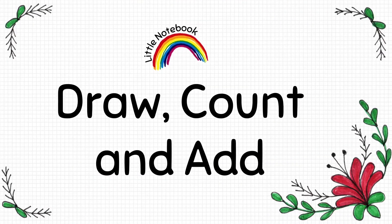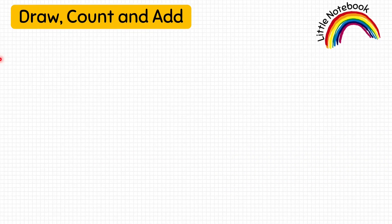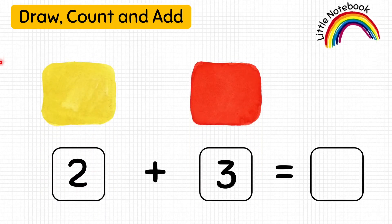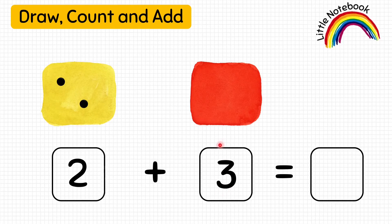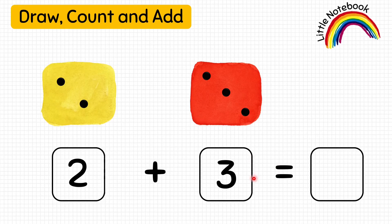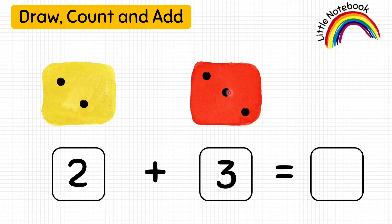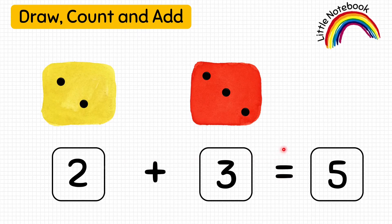Our next worksheet is Draw, Count, and Add. The kid has to read the numbers given and put the same number of dots on the dice, then add the dots by counting. The first number given is two, so the kid will make two dots in the yellow dice. The next number given is three, so the kid will make three dots in the red dice. Now count all the dots: one, two, three, four, five — write five. So two plus three equals five.